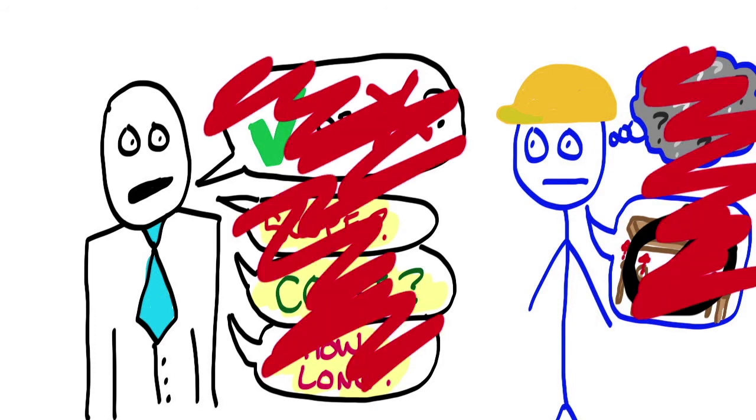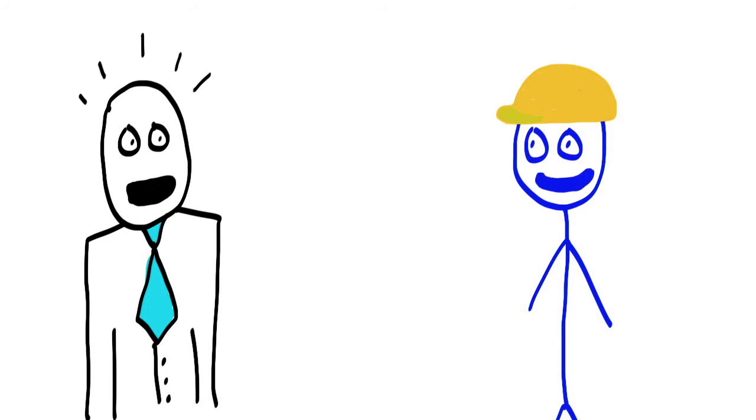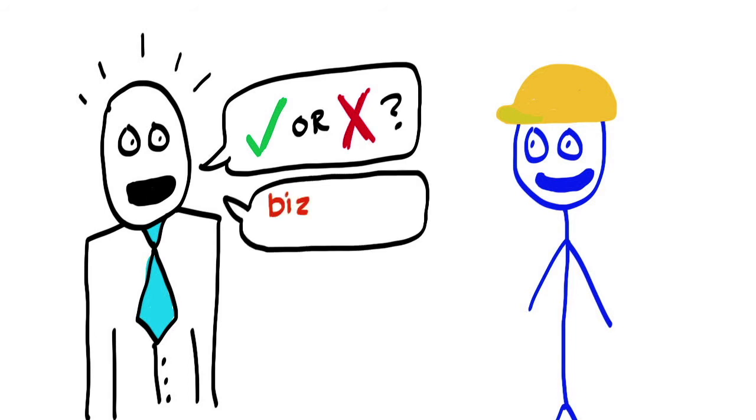A more useful interaction between the business and the project manager might be: the business needs to take a clear decision on this project. Should we go ahead with it or not?